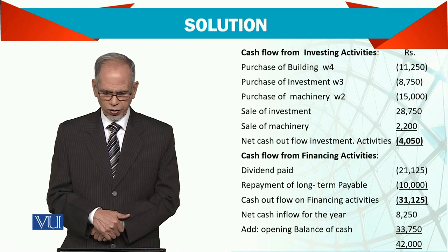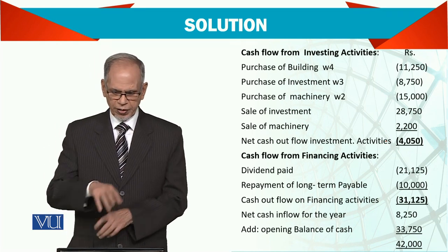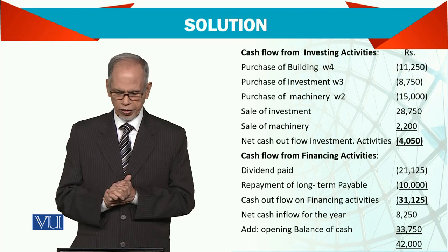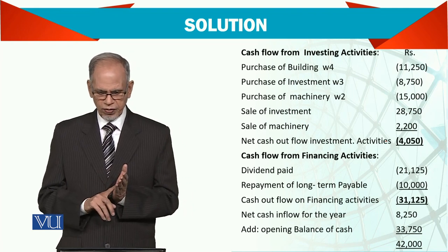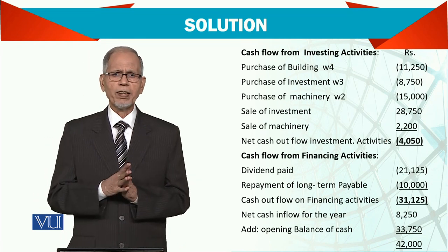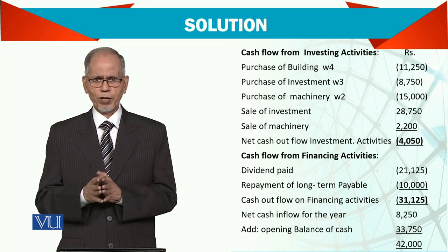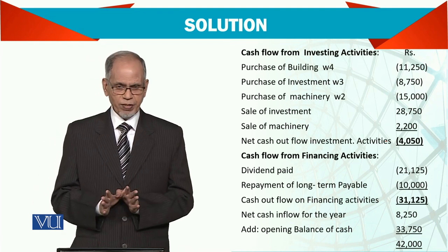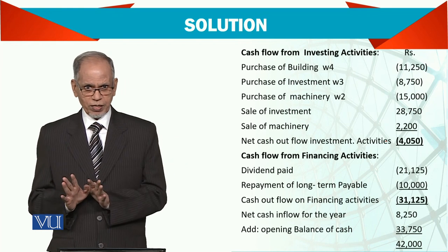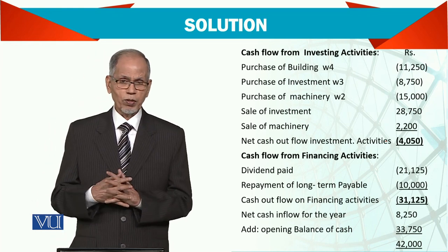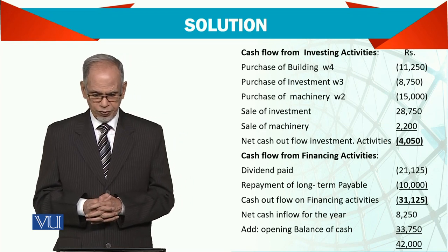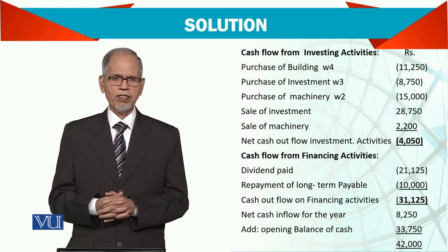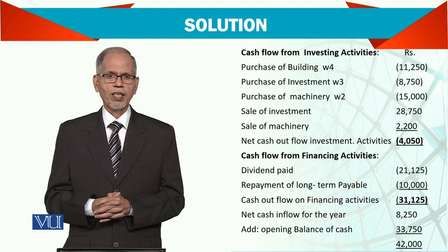Net cash outflow on investing activities — the bracket figures are negative, meaning outflow, and positive figures have no bracket. Total net cash outflow on investing activities means you paid more on investing activities. Coming to cash flow from financing activity, we have paid dividends. Note that a stock dividend was also paid, but that will not be reported here because there is no cash flow involved. Repayment of long-term liabilities results in a cash outflow on financing activity of $31,125.